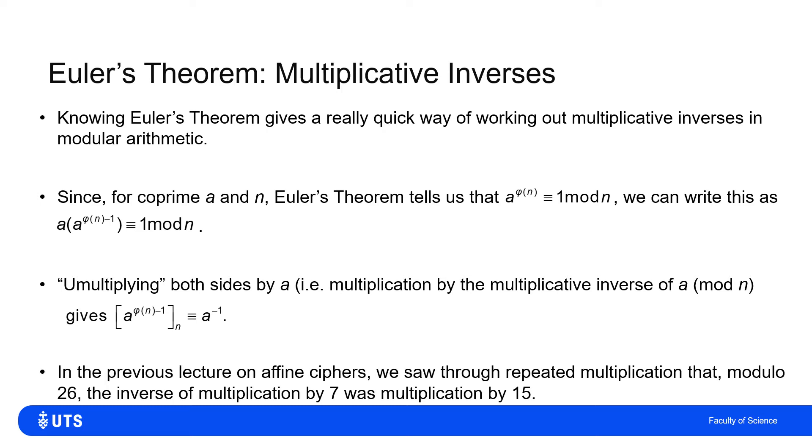Now, in the previous video where we did affine ciphers, we did the repeated multiplication, and we showed that mod 26, the inverse of multiplication by 7 was multiplication by 15, and we'll see that on the next slide.